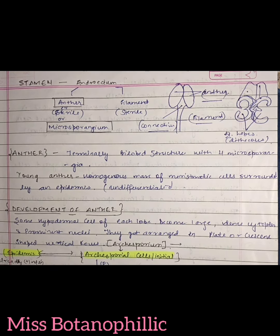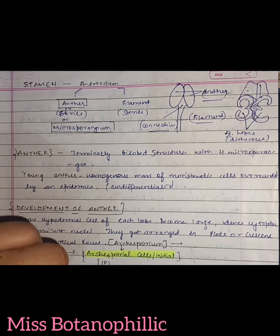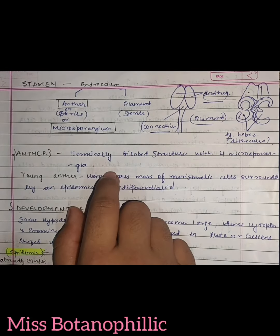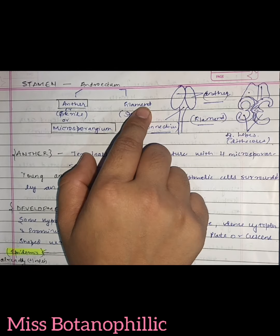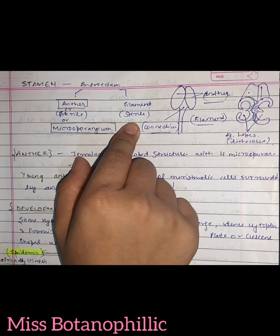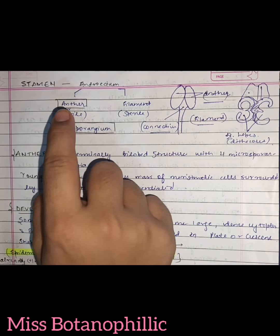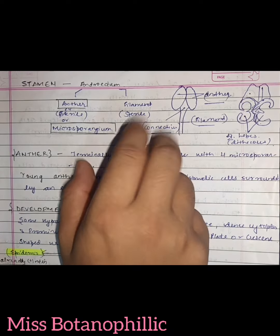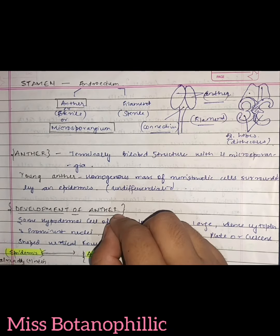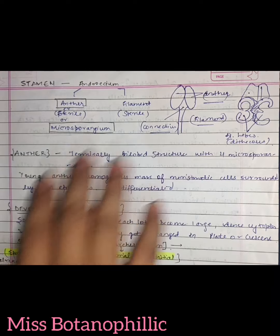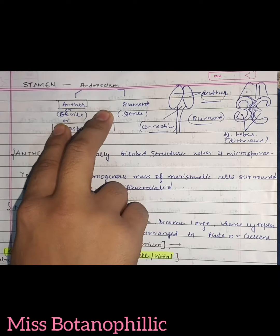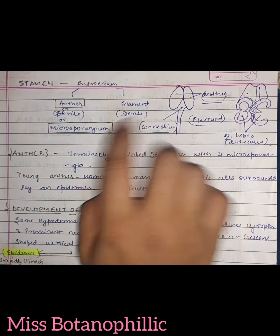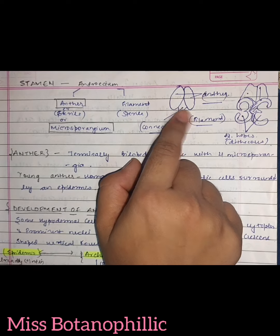First of all, we'll talk about stamen. The stamen, which we use as a combined word, is called androecium. There are two parts of androecium: the anther and the filament. The anther is the fertile part, and the filament is the sterile part. The anther and filament are connected by connective tissue. The anther is the present fertile structure, and the filament is the stalk-like structure.